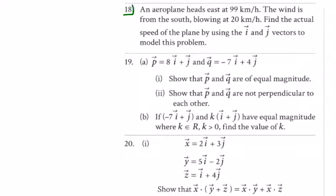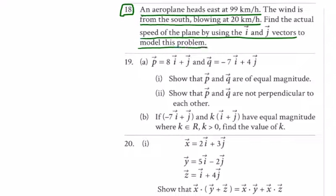So in this video we look at questions 18, 19, and 20. They're telling us an airplane heads east at 99 kilometers an hour and the wind is from the south blowing at 20 kilometers an hour. Find the actual speed of the plane by using the i and j vectors to model this problem. So they're setting us up for the questions that will follow here. An airplane, let's say it's here, let's say we'll always take like a point (0,0), it's heading east in this direction at 99 kilometers an hour.